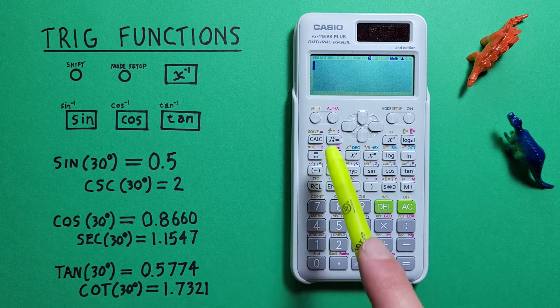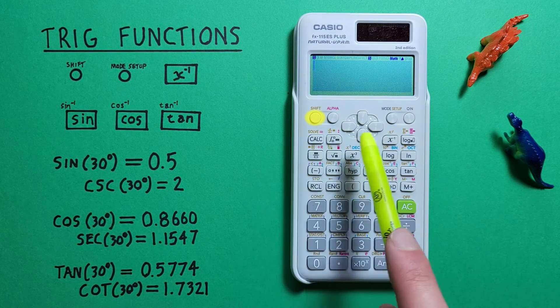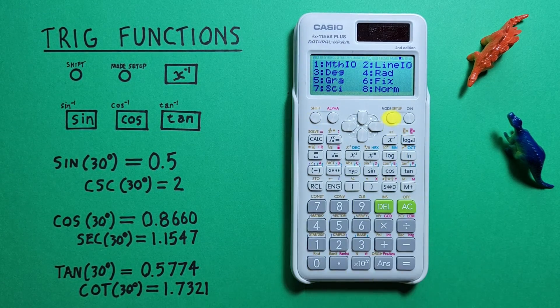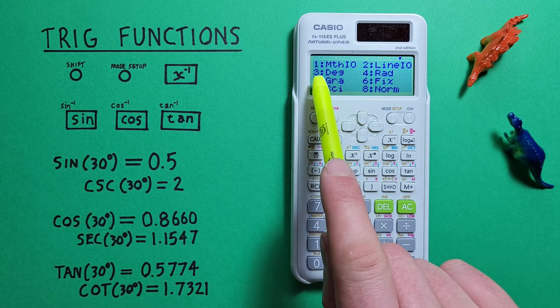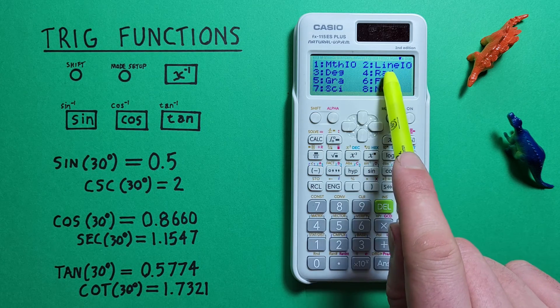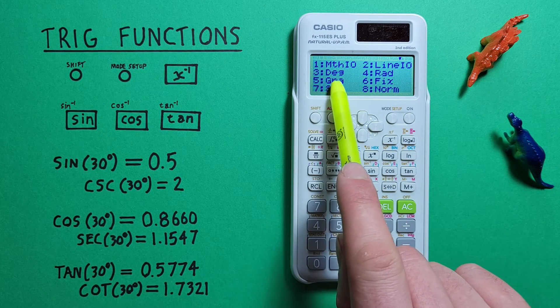To do this we press shift and then the mode key. That'll bring us to this menu here where we have number three degrees, four radians, or five gradians.